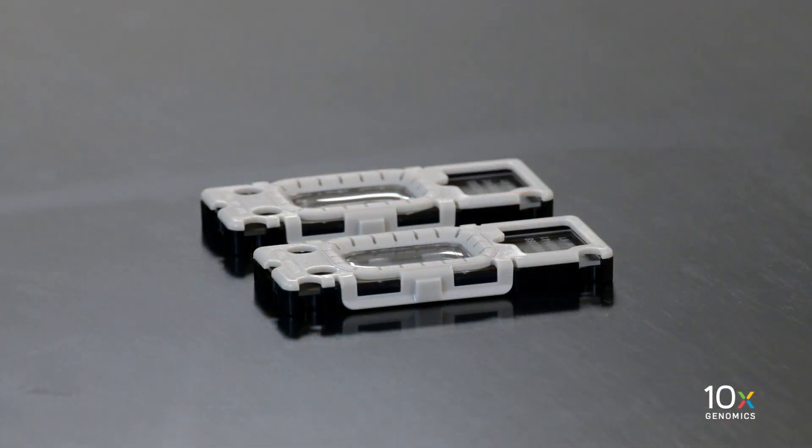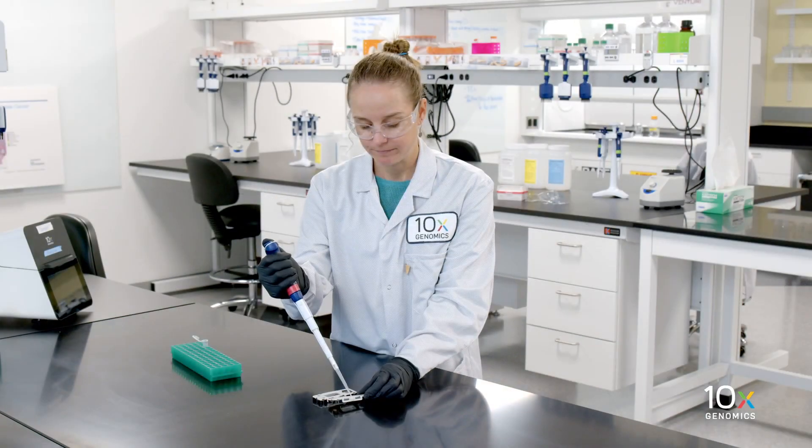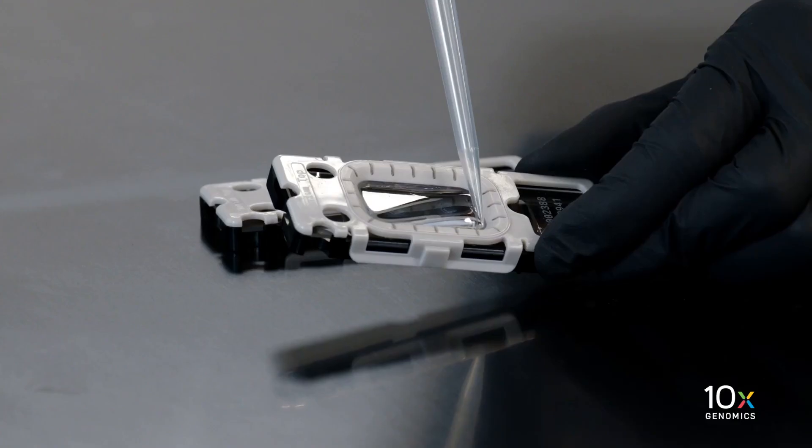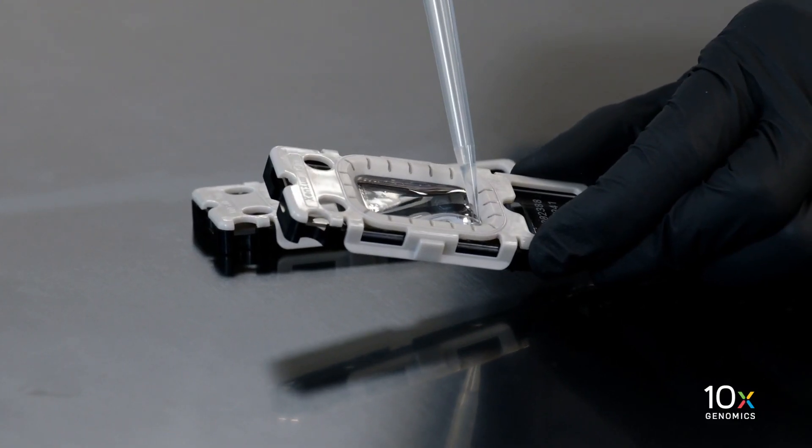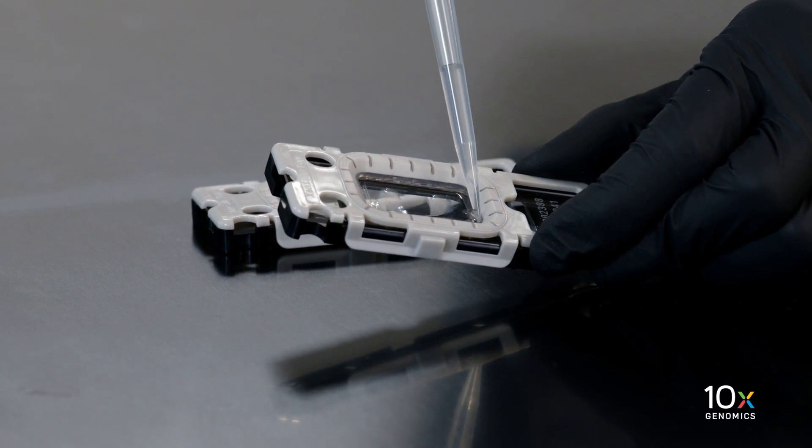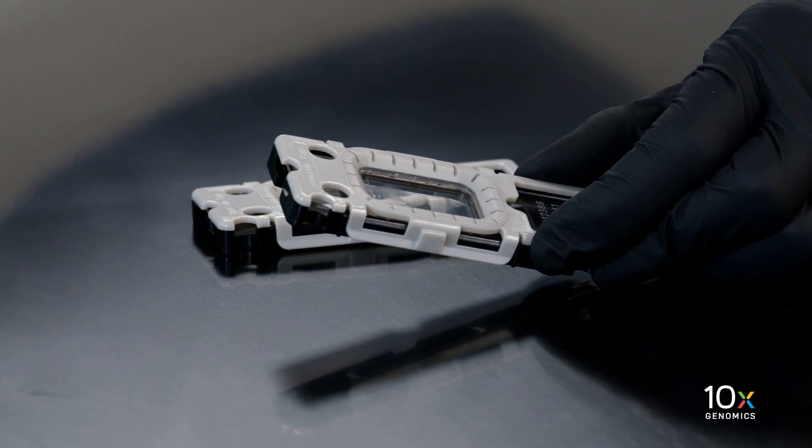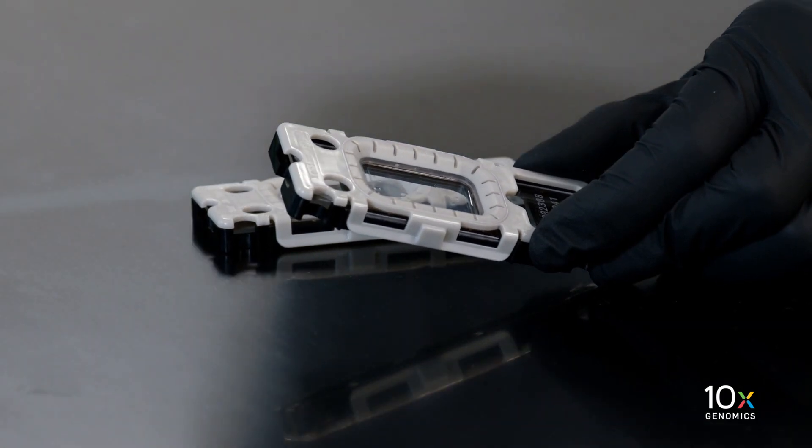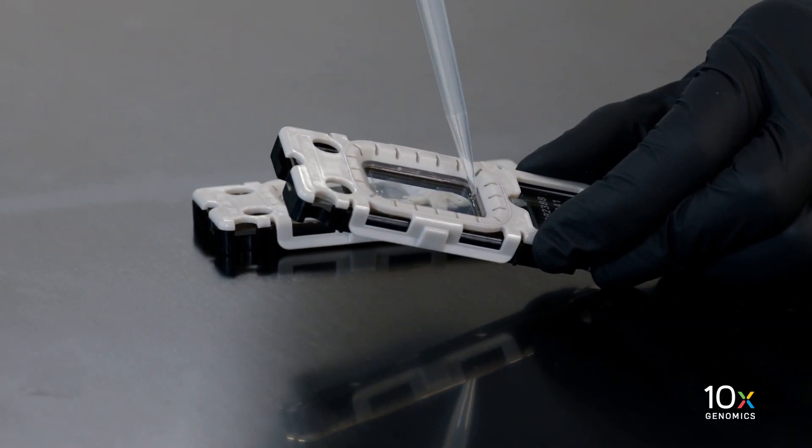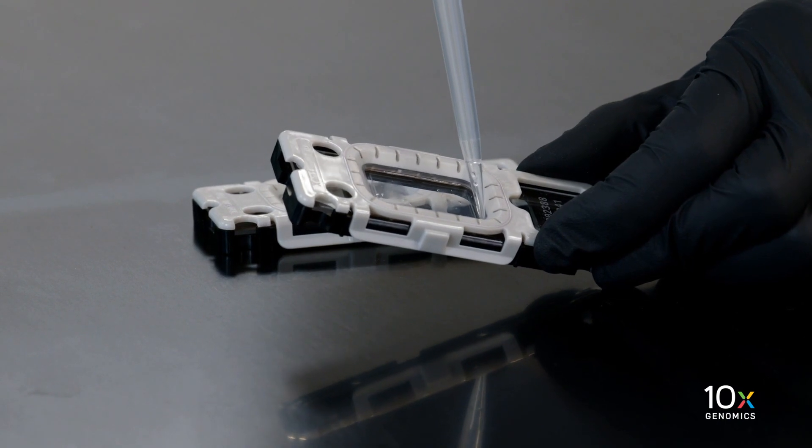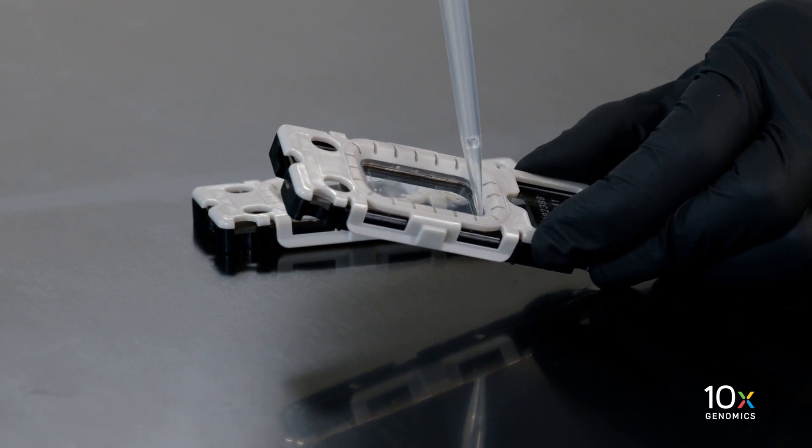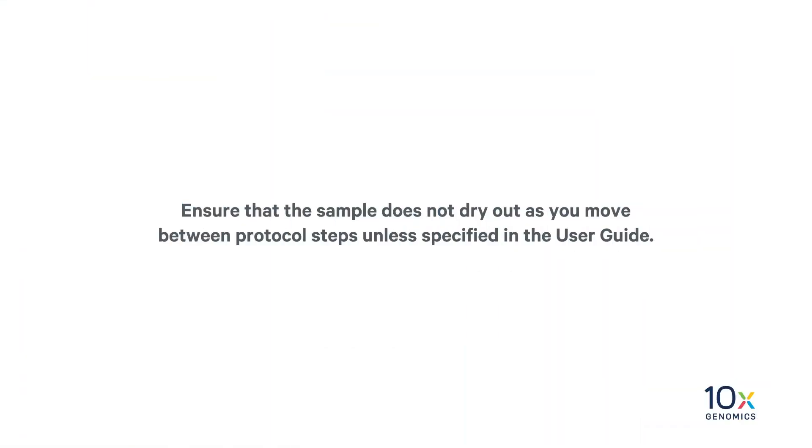Next, we will demonstrate removing liquid from the cassette. Slightly tilt the cassette while removing the reagent. Place the pipette tip on the bottom corner edge of the well. Remove reagents along the side of the well without touching the tissue sections when applicable and without introducing bubbles. Remove all liquid from the well in each step. Ensure that the sample does not dry out as you move between protocol steps unless specified in the user guide.